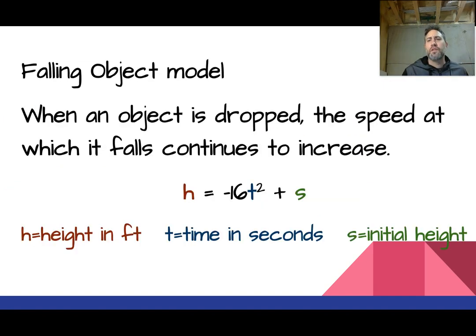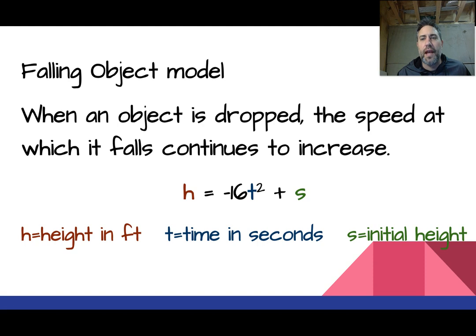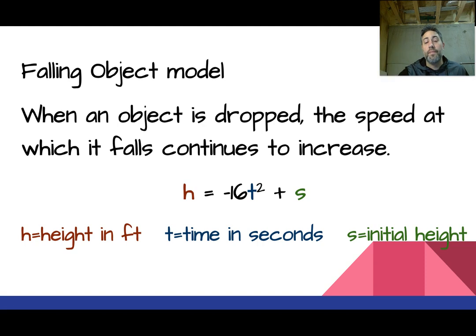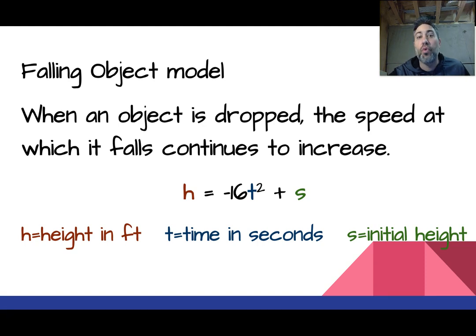The falling object model — we're going to have questions on your test with this. If you just take something like a pen and drop it, there's no velocity, and that's why we use this equation. It gets more complicated if you threw the pen down, because we'd add velocity. So there's no BX in this equation, and there will be when we start throwing things. That's the difference between the two models.